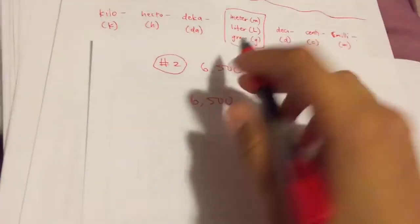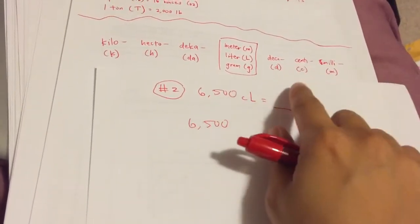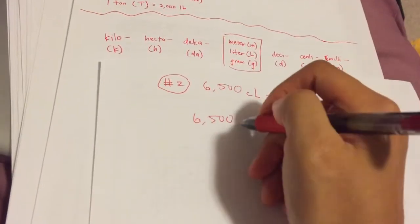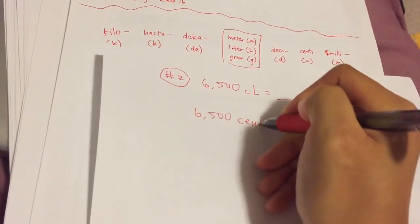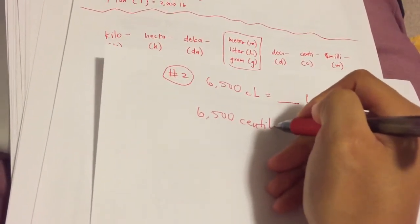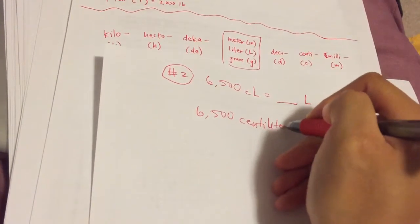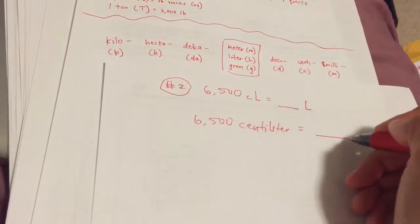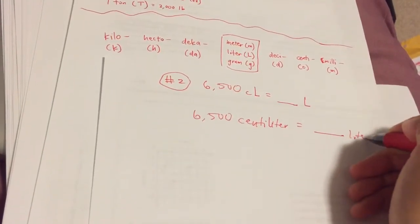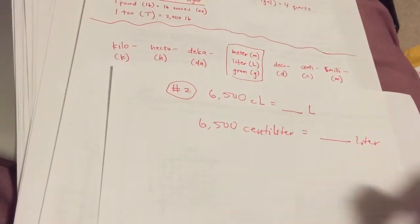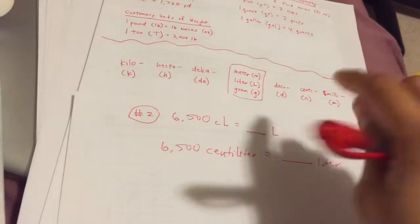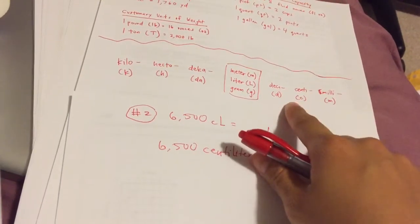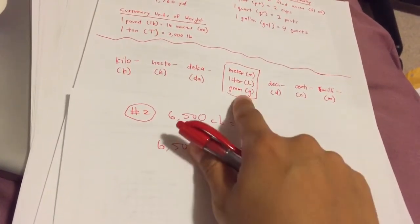Now, step one is to write out what the shortcut means. It's 6,500 CL. What does CL stand for? Here's the CL. It stands for centiliter.